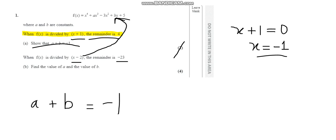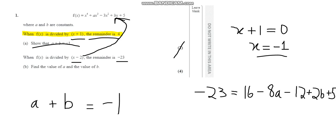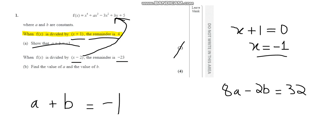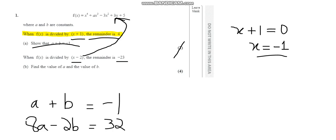I'll take the value of 2 and plug it into f(x), then solve the equations simultaneously to find a and b. So minus 23 equals 16 minus 8a minus 12 plus 2b plus 5. Doing some basic simplification gives minus 23 equals minus 8a plus 2b plus 9. Bringing common terms to one side gives 8a minus 2b equals 32, and that's our second equation.